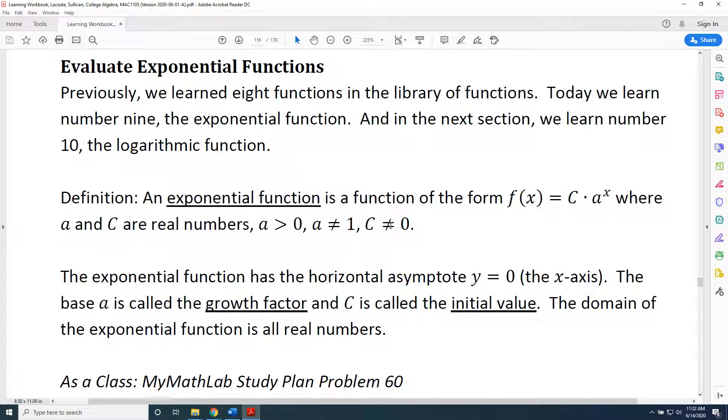Let's start with C ≠ 0. If C was equal to zero in this function, then we would have f(x) = 0·a^x. And by the zero property, that would simply multiply to make zero. Zero times anything is zero. So we would get f(x) = 0, which is a constant function. Therefore, it would no longer be an exponential function. That is why C is not allowed to be zero.